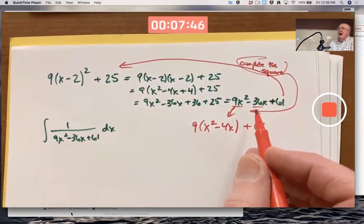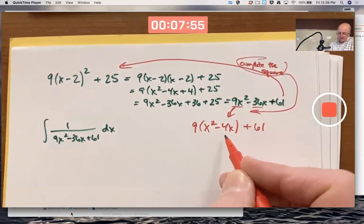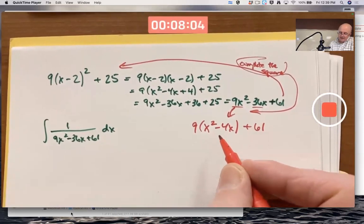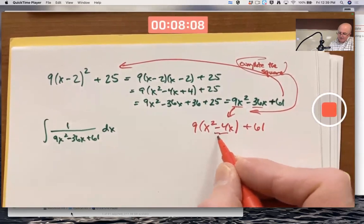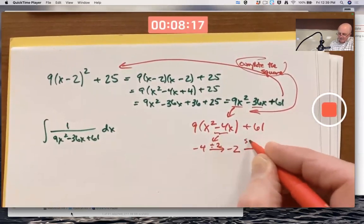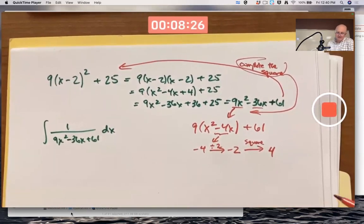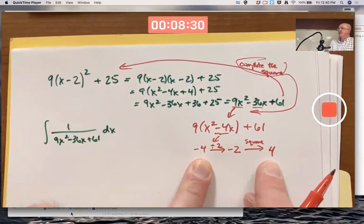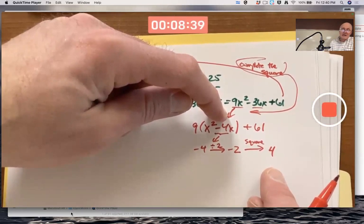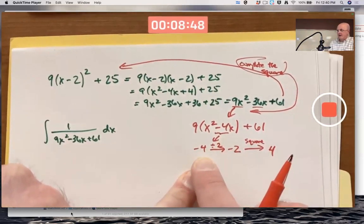Not the last term. That 9, I'm going to factor out of the first two terms like this: 9 times (x² - 4x). Just leave the plus 61 out there. I made it nice. 36 is divisible by 9. But even if it were not, even if it were 37, you'd still do the same thing.